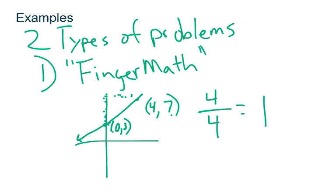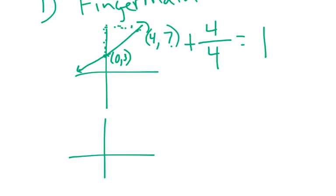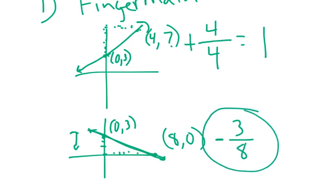We also have to look at direction. That first example was a positive slope because it's increasing from left to right. Now let's say we have a line from (0, 3) to (8, 0). We notice the line is going downward — it's negative. So I put a negative sign on my ratio. Counting the vertical distance: three units. The horizontal distance to x = 8 is eight spots. So the slope is negative 3 over 8.